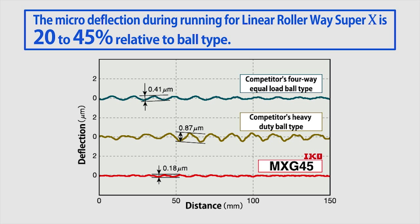Compared to the other company's ball type product, IKO Linear Rollerway Super X demonstrates a traveling parallelism approximately 20 to 45 percent that of the product.